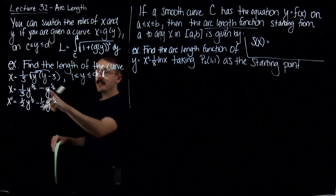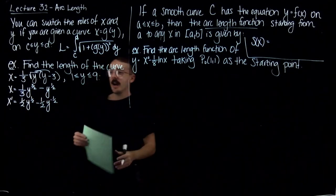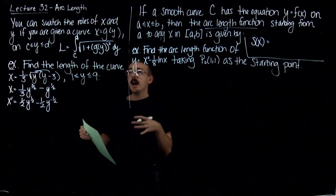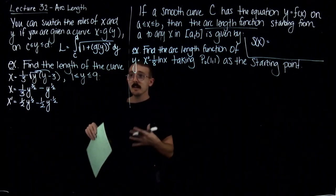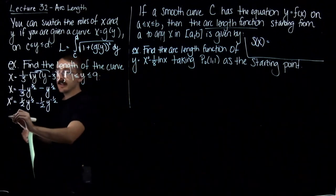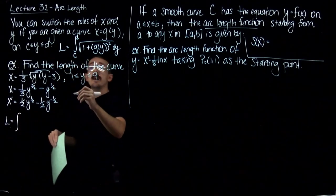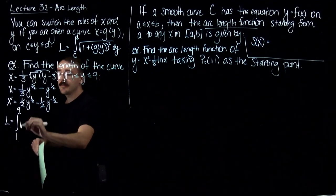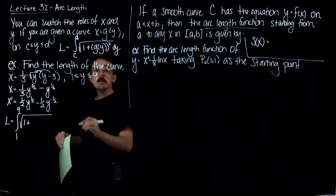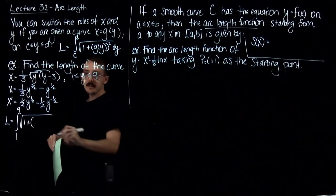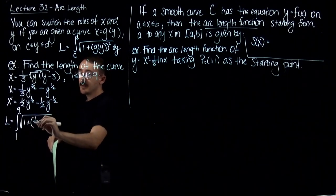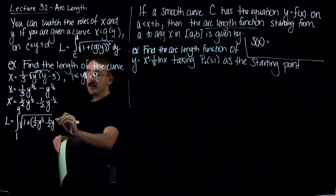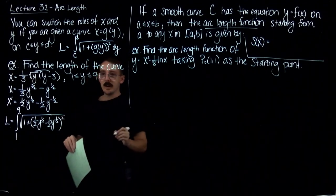Now I take the derivative of that to get g prime of y, which is going to be 1/2 y to the 1/2 minus 1/2 y to the negative 1/2. The 3/2 brought down gives a coefficient of 1/2 for the first term, and similarly for the second. I'm told my y values go from 1 to 9, so I'll integrate from 1 to 9. I have 1 plus my derivative squared.